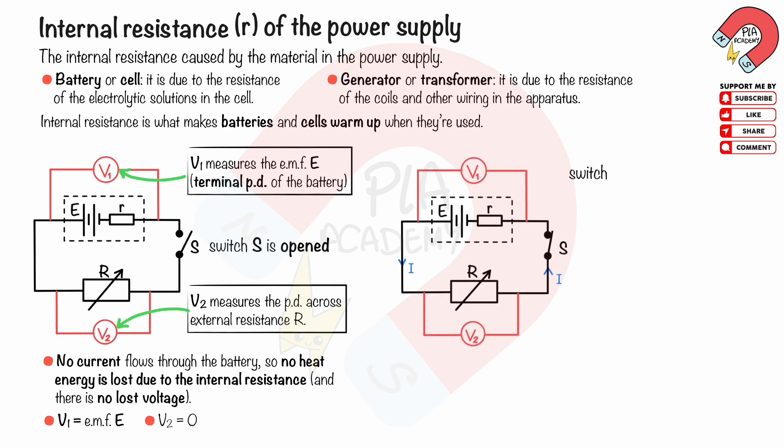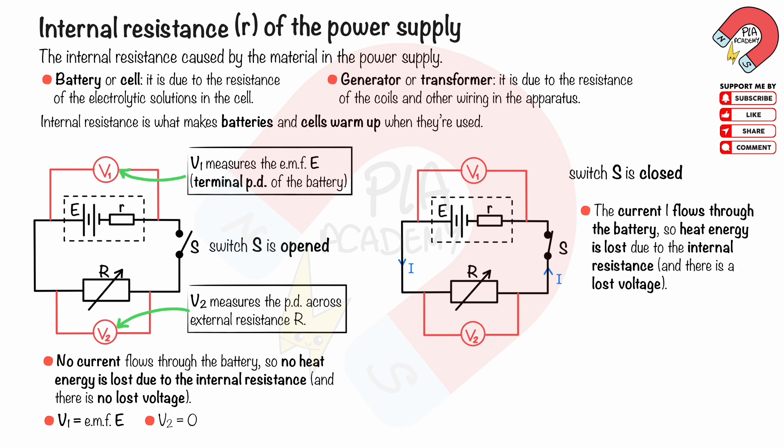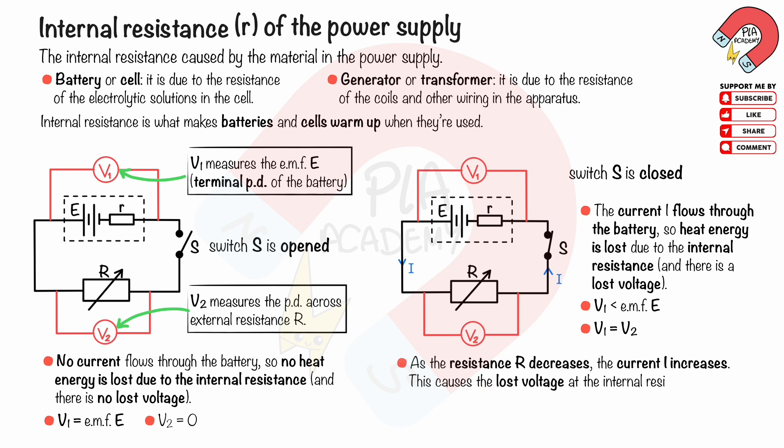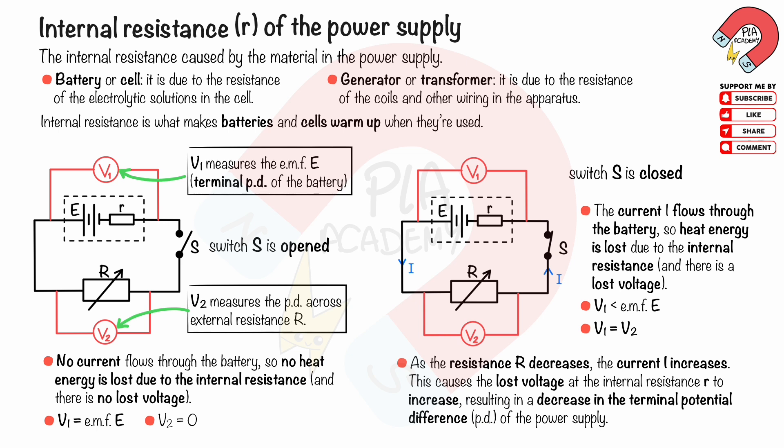As the switch S is closed, the current I flows through the battery, so heat energy is lost due to the internal resistance and there is a lost voltage. The voltmeter V1 decreases to less than the EMF E. The voltmeter V2 equals the terminal PD measured by V1, so V2 equals V1. As the resistance R decreases, the current I increases. This causes the lost voltage at the internal resistance r to increase, resulting in a decrease in the terminal PD of the power supply.